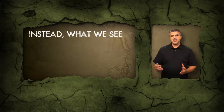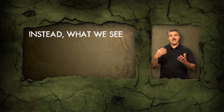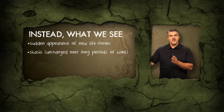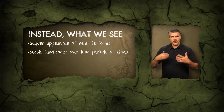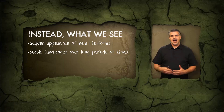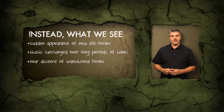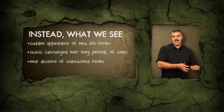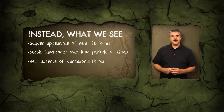Yet when we look at the fossil record, we see that instead of gradual evolutionary change, we see the sudden appearance of new forms and new major groups, followed by vast periods of time where those groups are unchanged — that is, they remain static, or they display stasis. We also see a near absence of transitional intermediates in the fossil record. These two features run counter to the predictions and expectations of the evolutionary model.